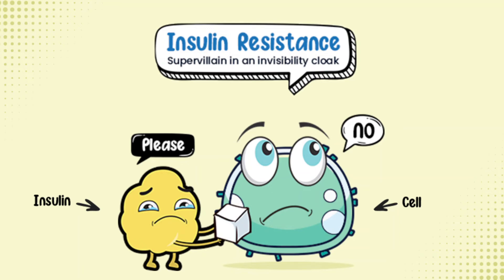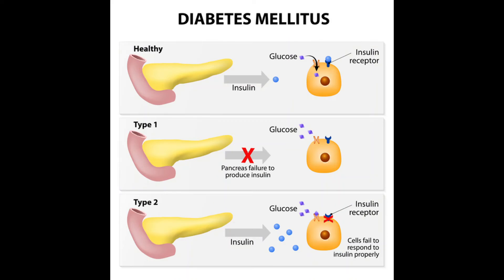Eye damage, or retinopathy — diabetes can damage the blood vessels of the eye, which could lead to blindness. Foot damage — nerve damage in the feet or poor blood flow to the feet increases the risk of many foot complications. Skin and mouth conditions — diabetes may leave you more prone to skin problems including bacterial and fungal infections.